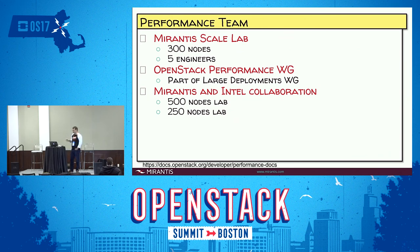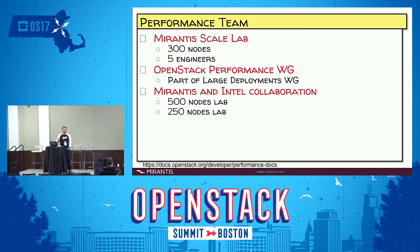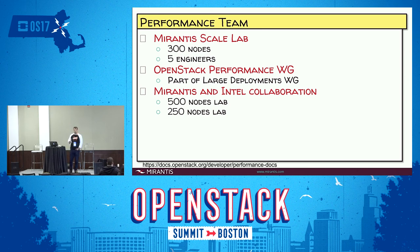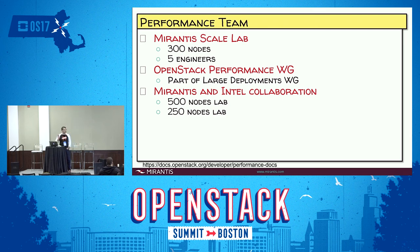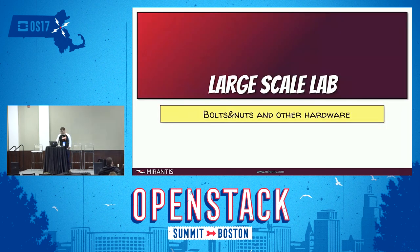At the beginning it was just a Mirantis lab with 300 physical nodes and five engineers. Then Intel came in and proposed a hardware lab — actually two labs — which we could use to run our scale tests. Thank you, Intel. We decided to fix the initial problem we had: to document everything we were doing and had done before. There is a link to the official OpenStack documentation site where you can find a lot of information about scale, performance, and reliability. All the work we did is available for everyone.